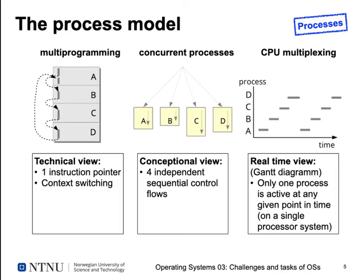From the view of your program, it just has a CPU all the time — each process thinks it has a CPU all the time. To maintain this illusion, the operating system switches between processes fast enough that they don't find out what's going on. Each process only knows about its own control flow, whereas the operating system has the global view of all processes in the system.